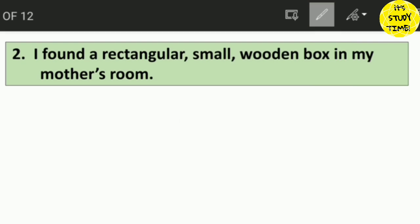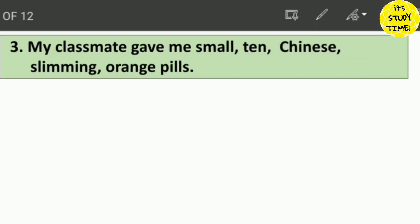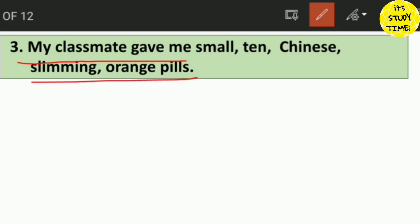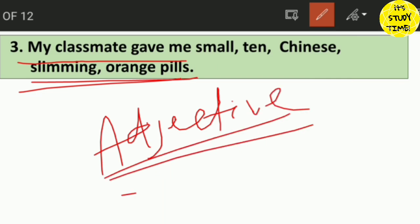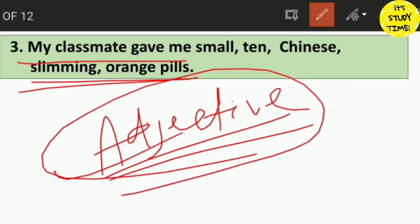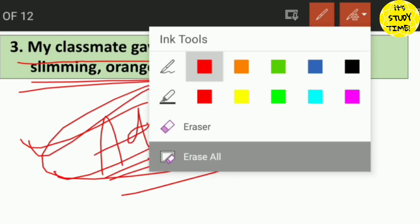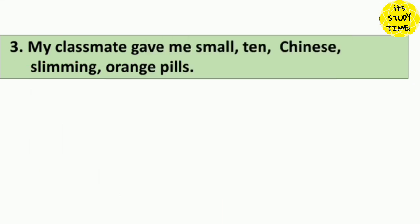So this is our adjective order. The third question is for you to answer: My classmate gave me small, tall, Chinese, slimming, orange bells. Write your answer in the comment box. This is the adjective order — a very good formula. We will discuss the next class in English grammar. Thank you.